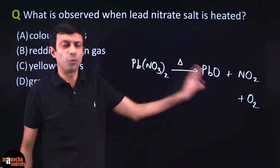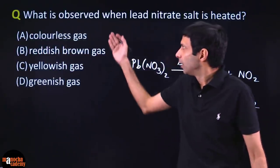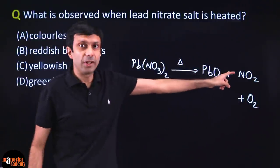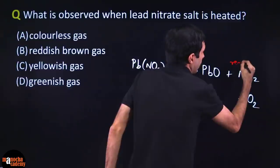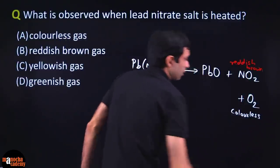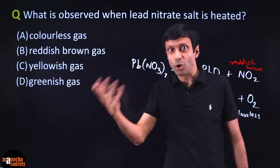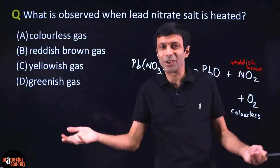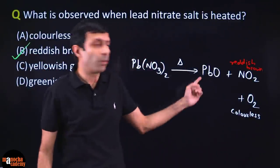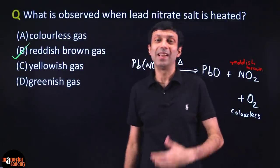Don't bother to balance the equation — nobody is checking your equation, you just need the products. The question is all about the color of gases. We know that nitrogen dioxide (NO₂) is a reddish brown gas, and oxygen is colorless. So we cannot select two options here. Since we can't see colorless gases like oxygen and nitrogen, the correct answer is reddish brown gas. Use your equations to confidently and quickly predict the right observation in chemistry.